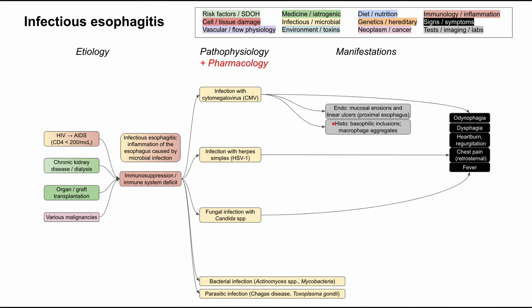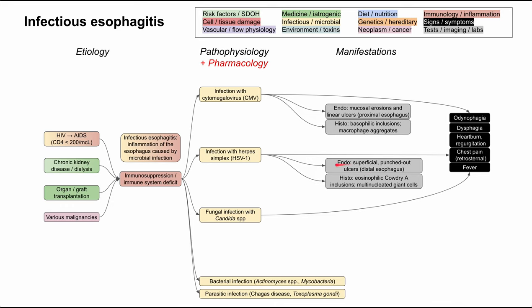For cytomegalovirus esophagitis, a patient will have mucosal erosions and linear ulcers in the proximal esophagus. This differs from herpes esophagitis, where the patient will have superficial punched-out ulcers in the distal esophagus. So in CMV you see linear ulcers in the proximal esophagus, while in herpes simplex the ulcers are rounder, superficial, and located in the distal esophagus.